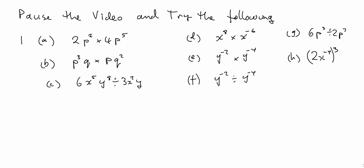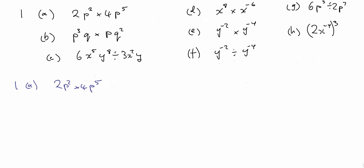Pause the video and try the following problems. 2p squared times 4p to the power of 5: multiply 2 times 4 to give 8, and add the indices for p to the power of 2 plus 5, which is p to the power of 7. So the answer is 8p to the power of 7.